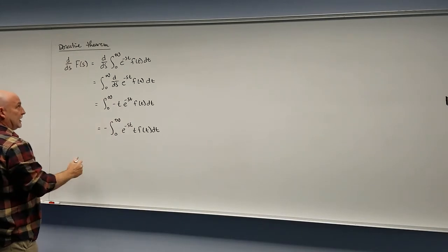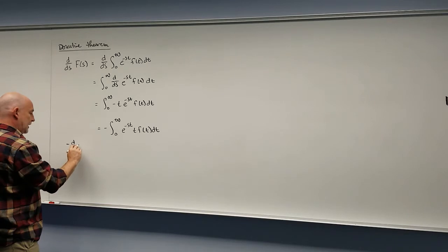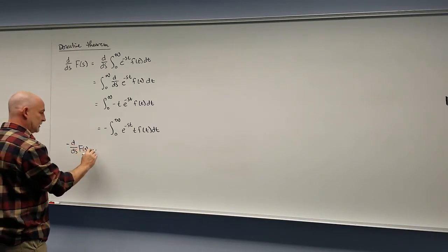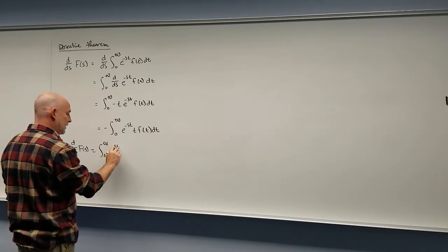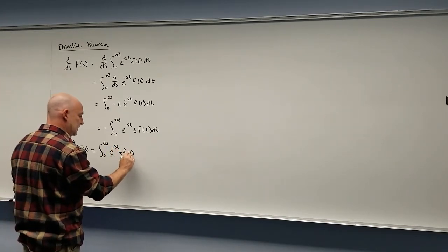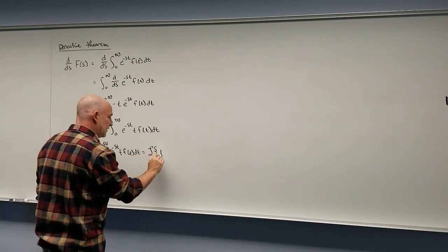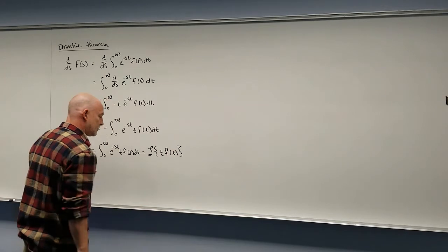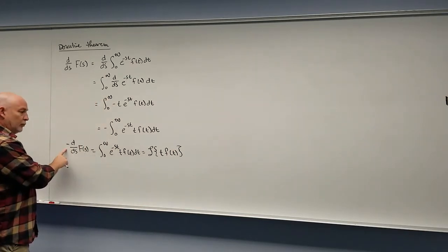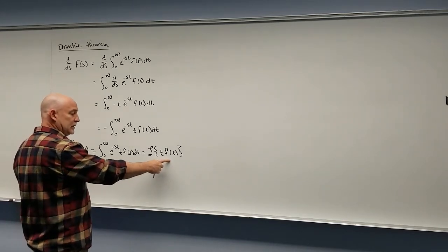The reason T stays inside is because this is an integral with respect to T — it can't leave. So basically, if I took the derivative in the S world, I ended up adding a T to my function with a negative. Or, bringing the negative to the other side: the negative derivative with respect to S of big F(S) equals the integral from zero to infinity of e to the negative ST times T times f(t) dt. That's the Laplace transform of T·f(t).